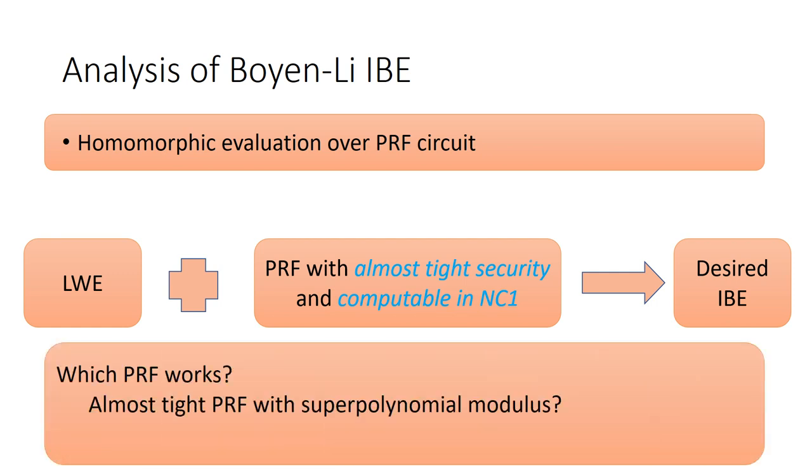Next, we consider which PRF works for this black box construction. Clearly, the existing almost-tight PRF with super-polynomial modulus does not work here. And how about our new results on GGM-based construction and Kim's concurrent work? Unfortunately, both two works are still not in NC1. Thus, they cannot be directly used to obtain the desired IBE.